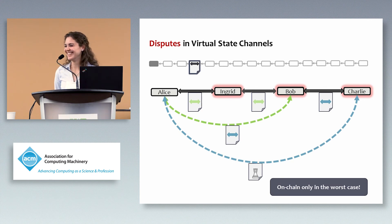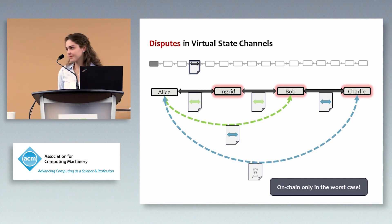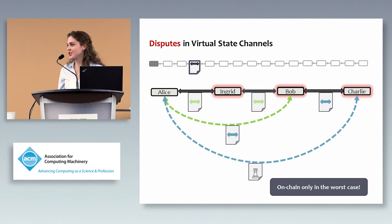Question: The examples only support two participants — is it possible for the smart contracts in this system to support multiple participants? Answer: That is an extension to our work that can of course be done, but at the moment we support only two parties.